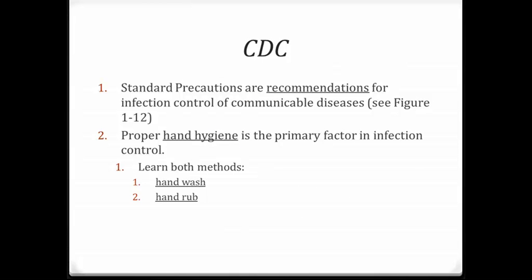The CDC, Centers for Disease Control, is responsible for developing standard precautions — recommendations for infection control of communicable diseases. You can also see figure 112 in your book for more details. The CDC also comes up with recommendations on proper hand washing procedures, which is a primary factor in infection control. There are a couple of ways of hand hygiene: proper hand washing and the use of proper hand rubs.